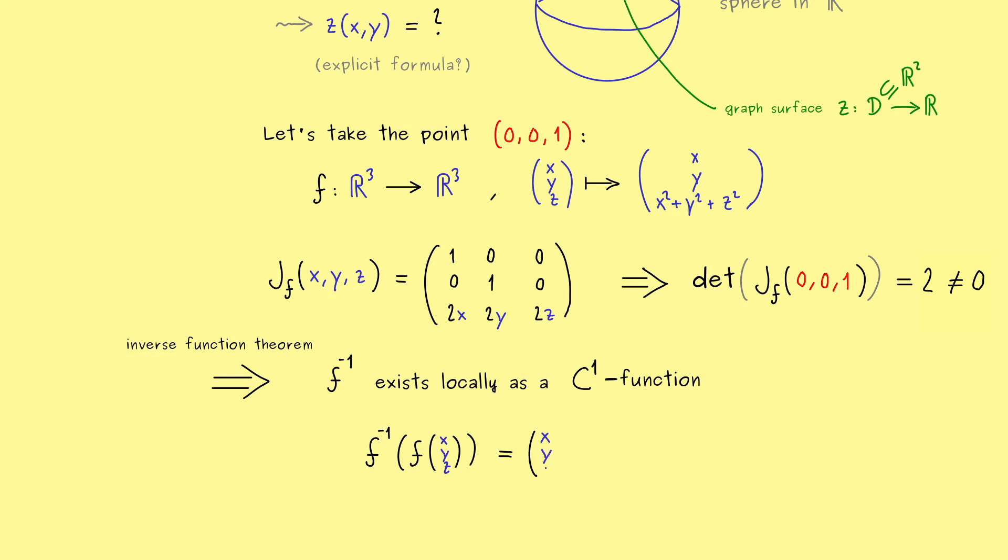Simply because we already know what f is. So actually, what we put into f inverse is (x, y, x² + y² + z²). And now we also know that this inverse here works for a whole open subset in ℝ³.